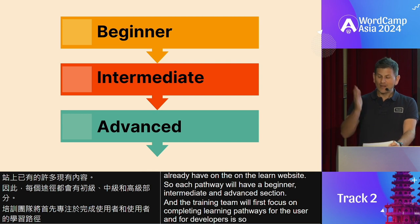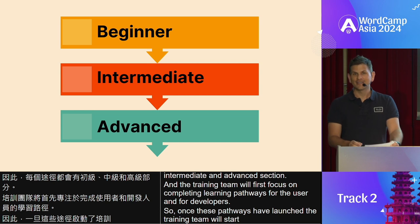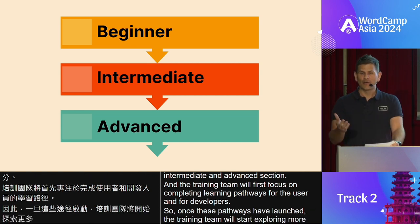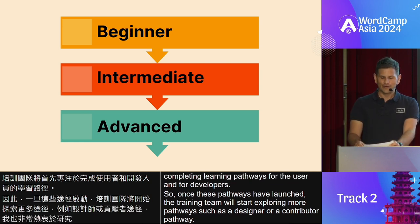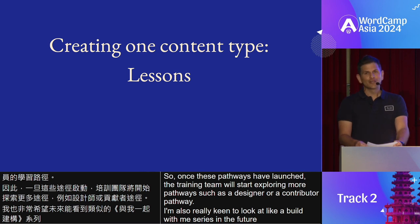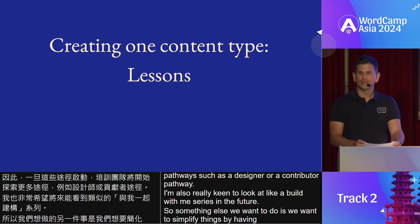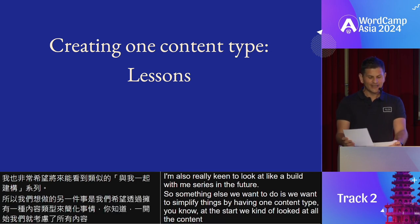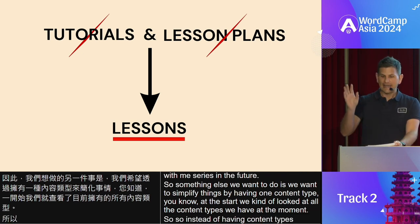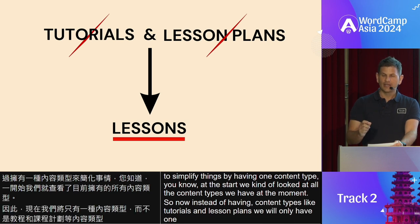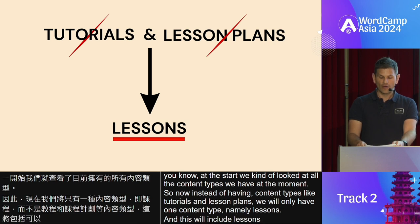Each pathway will have a beginner, intermediate, and advanced section. The training team will first focus on completing learning pathways for the user and for developers. Once these pathways have launched, the team will start exploring more pathways such as a designer or contributor pathway. Something else we want to do is simplify things by having one content type. Instead of having tutorials and lesson plans, we will only have one content type, namely lessons — and this will include lessons that currently form part of courses.